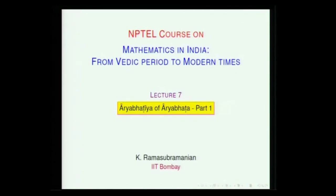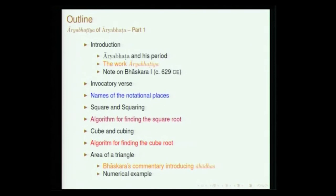So far we looked at the mathematical concepts that were available in some of the most ancient texts — the Vedas and Sulva Sutras. In the next three to four talks, we will be focusing our attention on a single text called Aryabhatiya of Aryabhata. Aryabhata was in the later part of the fifth century and his text Aryabhatiya is one of the most seminal texts on Indian astronomy and mathematics.